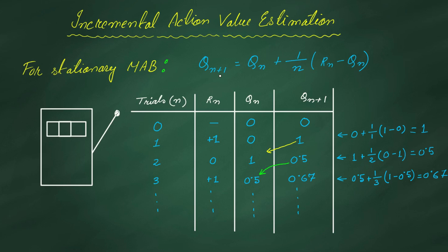We typically denote the action value as q. There is a way to incrementally update the action value. In the formula, qn+1 is the new updated action value and qn is the previous one. rn is the current reward obtained from a particular trial. We increment the old qn value towards the new rn by multiplying (rn minus qn) by one over n, where n is the number of trials, and adding this to qn.